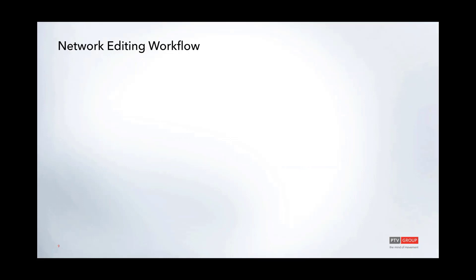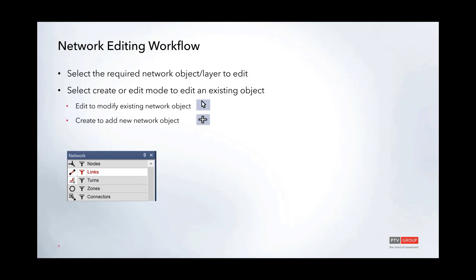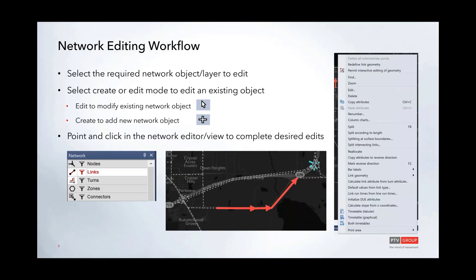The overall network editing workflow in vZoom is: first, select the required network object layer to edit — for example, select links to edit links. Then select create or edit mode depending on whether you're modifying existing objects or adding new ones. Finally, use point-and-click operations to add new network objects or modify existing ones. This workflow works the same way for all network objects.